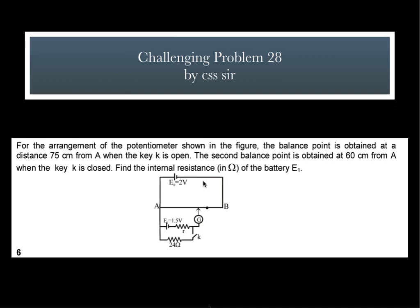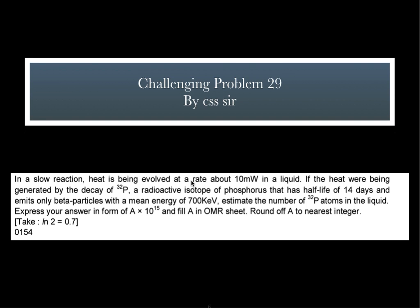The next problem is from electrostatics, that too from the very interesting topic potentiometer. For the arrangement of the potentiometer shown in the figure, the balance point is obtained at a distance 75 centimeter from A when the key K is open. The second balance point is obtained at 60 centimeter from A when the key K is closed. Find the internal resistance of the battery. You are given the data and you have to find out internal resistance. I have given answer of every question in the corner. So in case you have solved it and get the same answer, you can justify yourself. If you are not getting this answer, wait for the solution or if you feel that my answer is wrong, you can write in the comment box so that I can correct it.